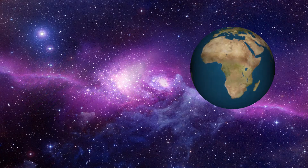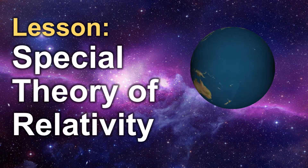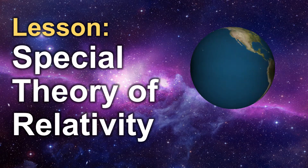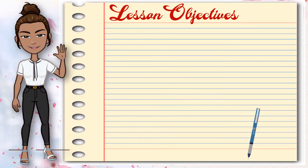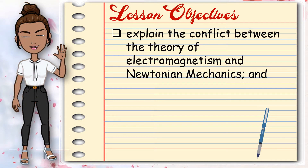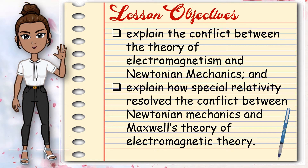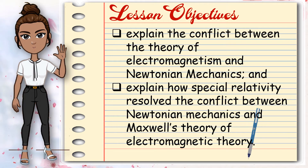The lesson today is Special Theory of Relativity. At the end of this module, you should be able to explain the conflict between the theory of electromagnetism and Newtonian mechanics, and explain how special relativity resolved the conflict between Newtonian mechanics and Maxwell's theory of electromagnetic theory.